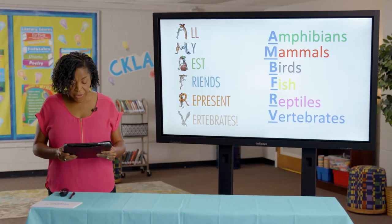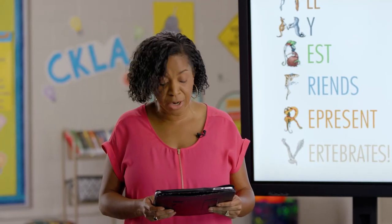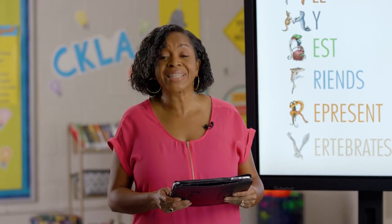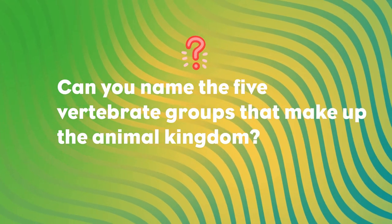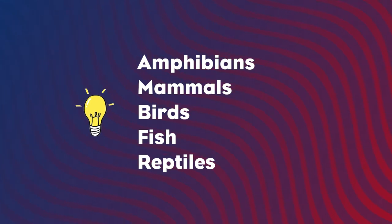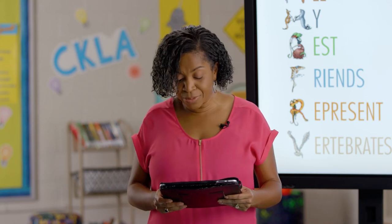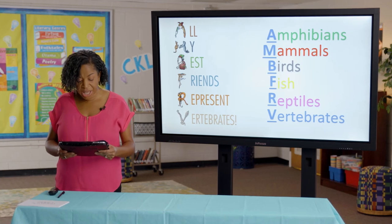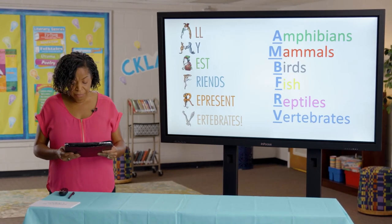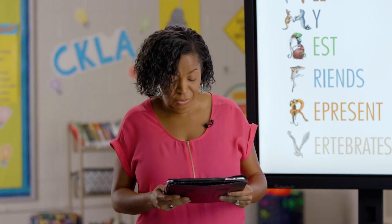Now that you've learned about each vertebrate group, you know about many characteristics that taxonomists use to classify these animals. Why do scientists classify organisms? Because there are so many living things on earth, it gives scientists a way of studying them by showing their relationships. And how do they classify them? They look for common or shared characteristics.